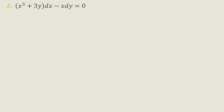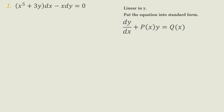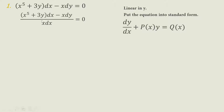For example, X raised to the fifth power plus 3Y times DX minus X DY equals zero. For our first step, we have to put it in standard form. We are going to use the linearity in Y: DY/DX plus P(X) times Y equals Q(X). Dividing all terms of our equation by X DX.